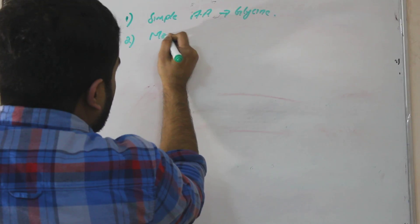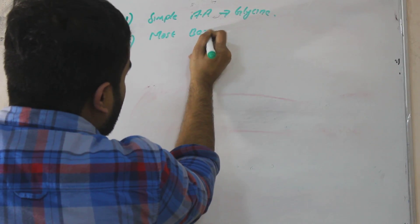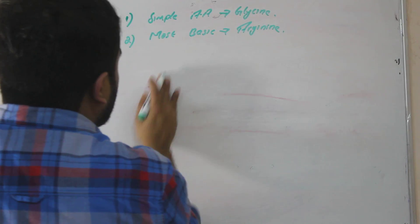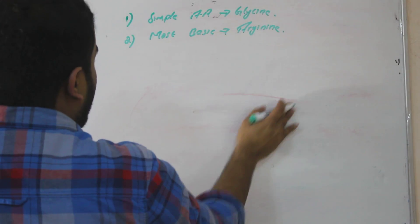Most basic amino acid was what? Arginine. Most basic was arginine.